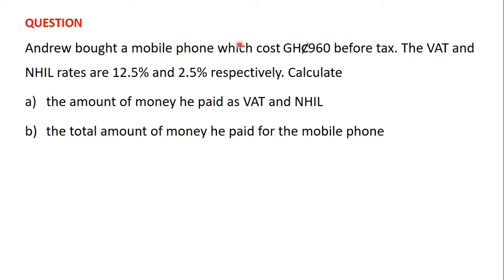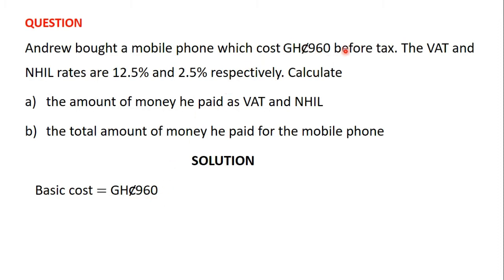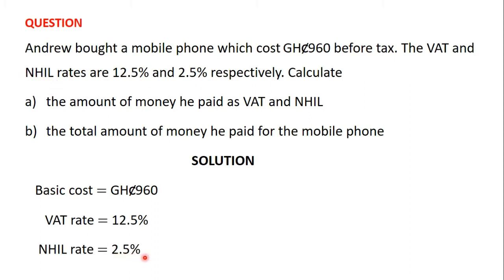Andrew bought this mobile phone that cost 960 Ghana cedis before tax. It means that the basic cost of the mobile phone is 960 Ghana cedis — that is the cost of the phone before tax, the tax-exclusive cost. He paid two taxes: first, the value-added tax, which has a rate of 12.5%, and he also paid the national health insurance levy, which has a rate of 2.5%.